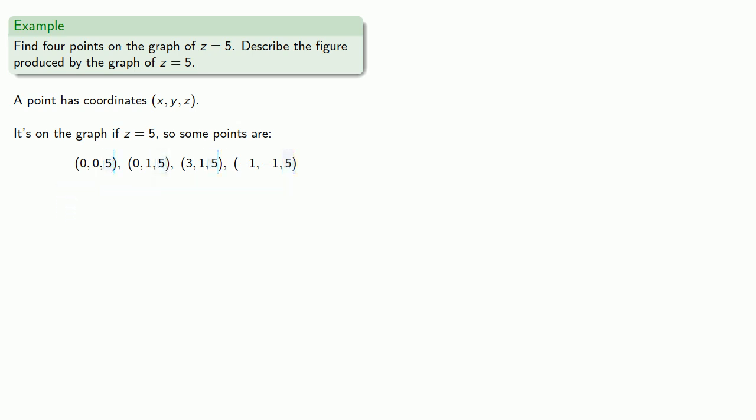And if we graph these points... So for 0, 0, 5, don't go anywhere along the x or y-axes, but do go 5 units straight up. 0, 1, 5, that's don't go anywhere along the x-axis, go 1 unit along y, and 5 units straight up. 3, 1, 5, that's 3 along x, 1 parallel to y, and 5 units vertically.